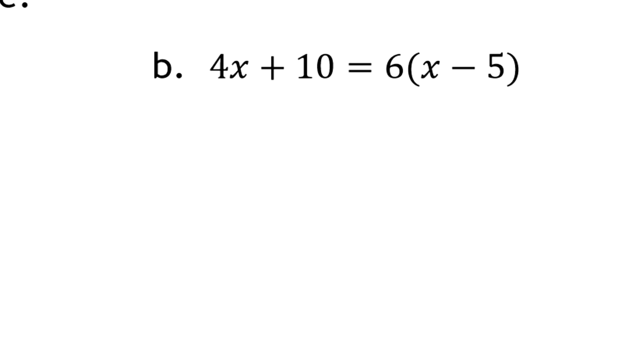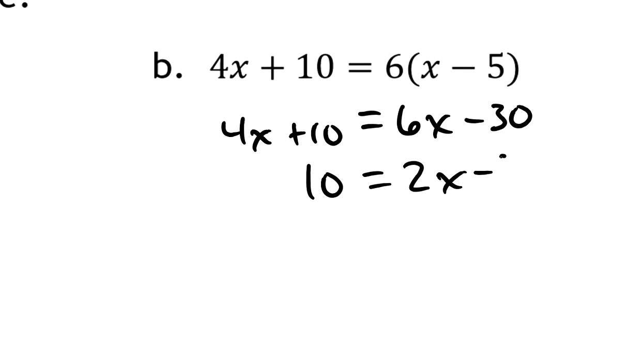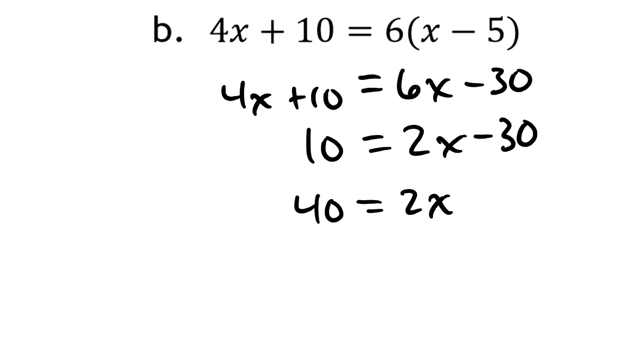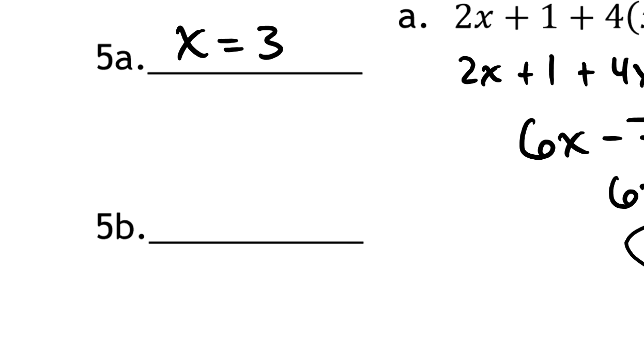Let's look at question B. Distributive property on the right-hand side, it's 6 times x minus 30. Over here, we've got 4x plus 10. I'm going to subtract 4x's from each side. So that gives me that 10 equals 2x minus 30. I'm going to now add 30 to both sides, so 40 is the 2x. And then I'll divide both sides by 2. So 20 is what x is, or x is 20. We can write that down over here. x is the number 20.